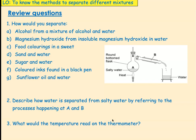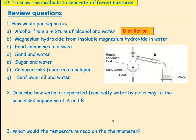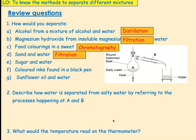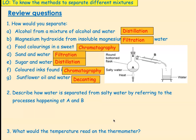Okay, alcohol from a mixture of alcohol and water. Because you've got two liquids of different boiling points, that is distillation. Magnesium hydroxide from insoluble magnesium hydroxide in water. Because it's insoluble, we use filtration. Food colorings in a sweet, that's chromatography. Sand and water, well sand is insoluble, so it's filtration. Sugar and water, well because you've got a soluble substance and a liquid, you can use crystallization or you could use distillation. Colored inks found in a black pen, that's chromatography. And this one was a bit sneaky because we hadn't talked about it. But you would use decanting, that just means pouring off the top layer.